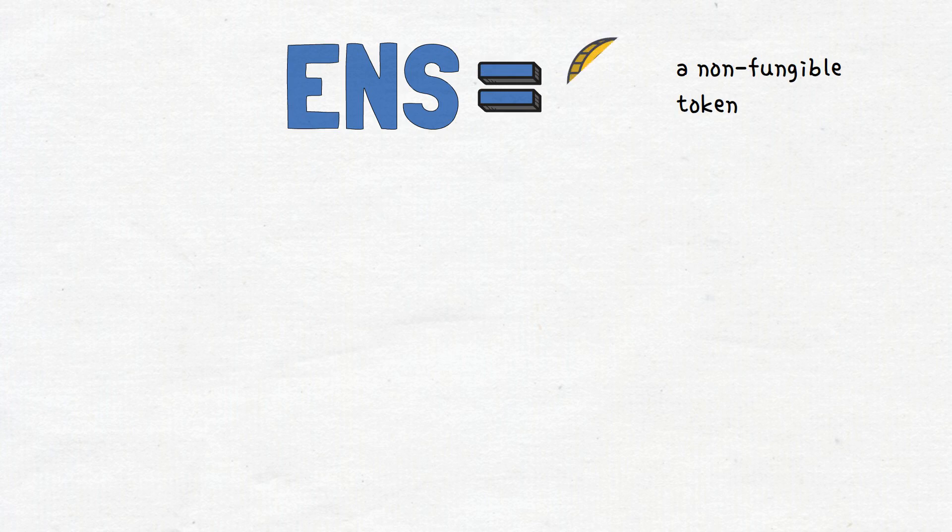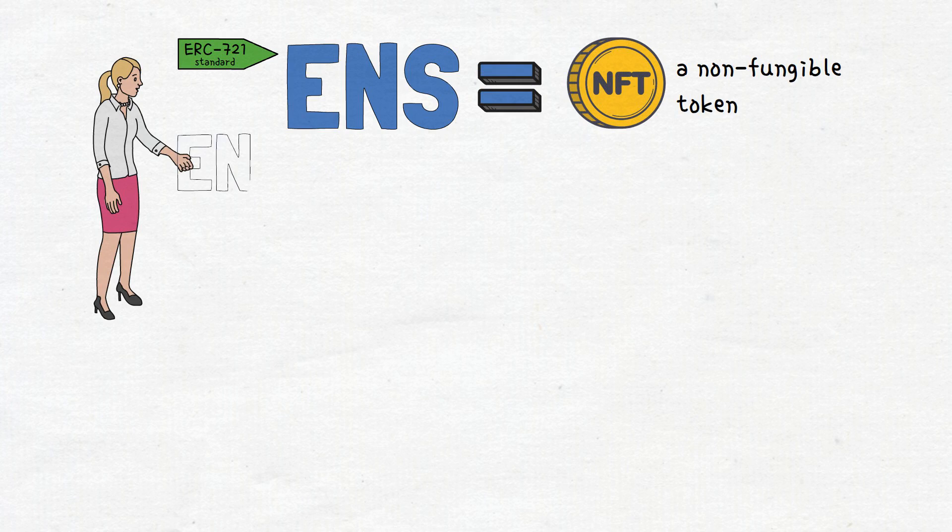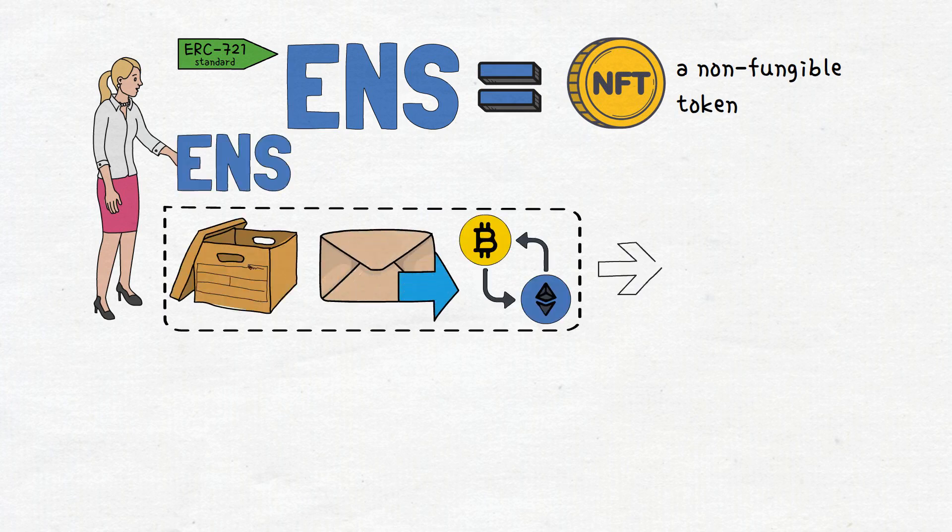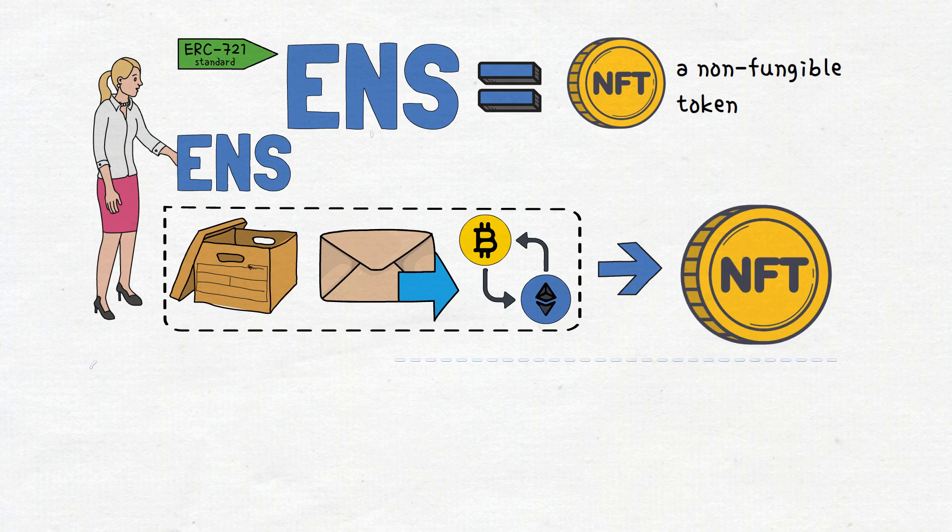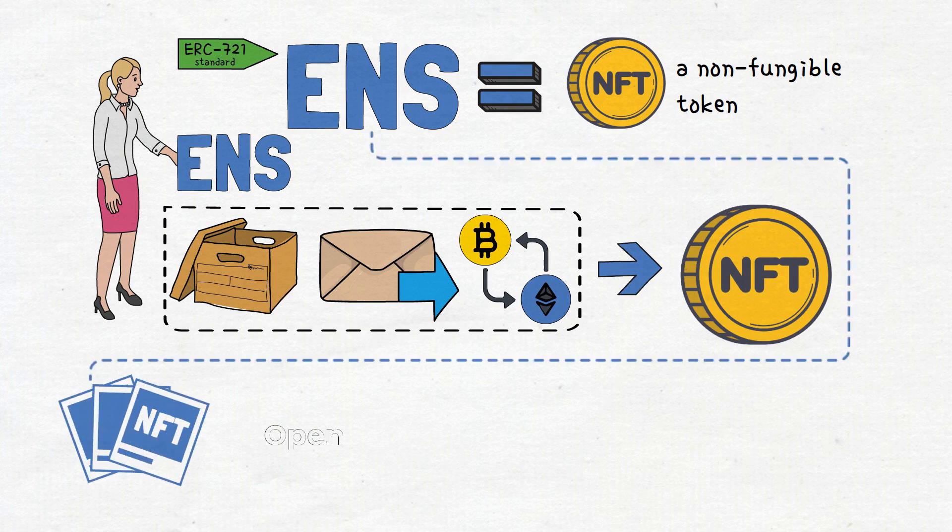Moreover, ENS can also be used as non-fungible tokens, or NFTs, due to their ERC721 standard nature. In a nutshell, this means that owners of ENS domain names can store, transfer and trade them as any other digital collectible. In fact, Ethereum name service is a verified collection on OpenSea with thousands of domain names ranging from Binance Web3.eth to Metaverse.eth.